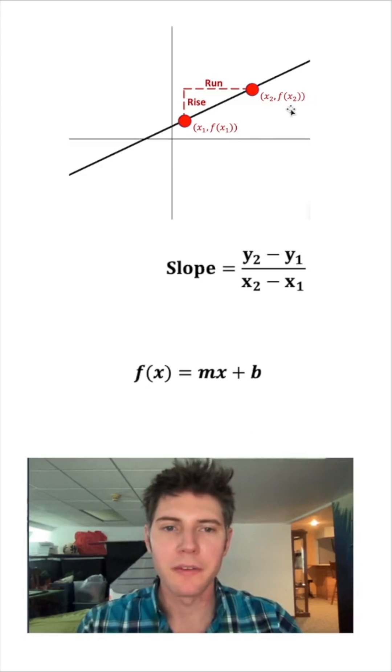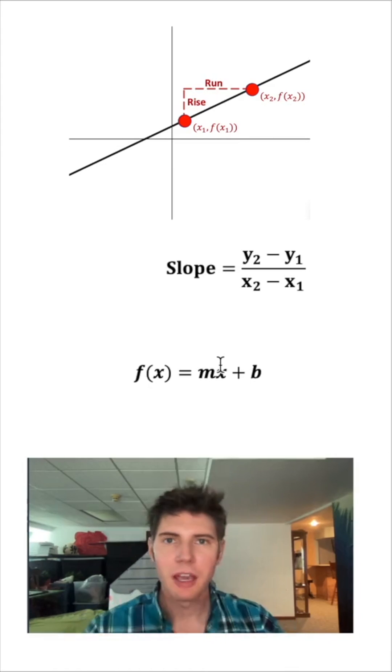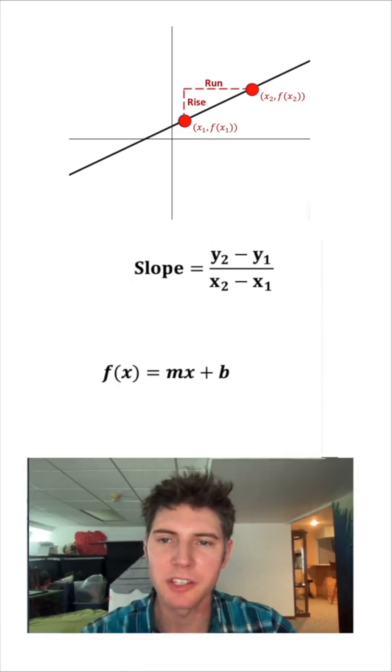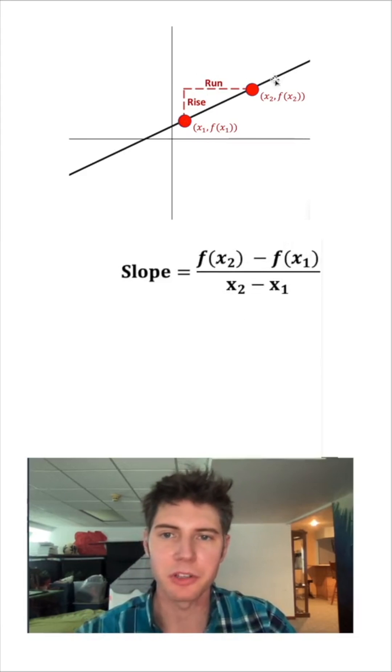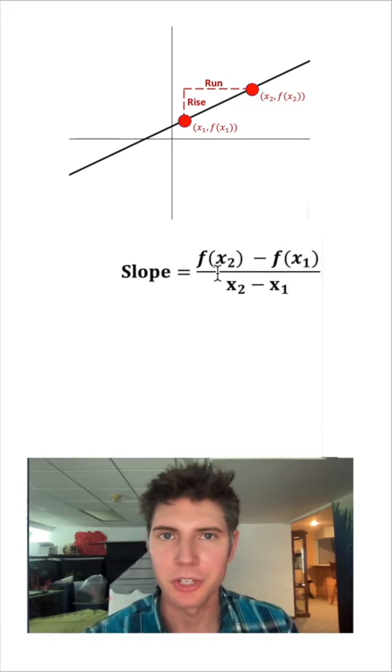And when we plug in x2, we're going to have an output of f of x2. And we can also change our slope. Instead of y2, let's make it f of x2 minus f of x1. So it's the exact same thing. We're measuring the rise over run. But we're using function notation instead.